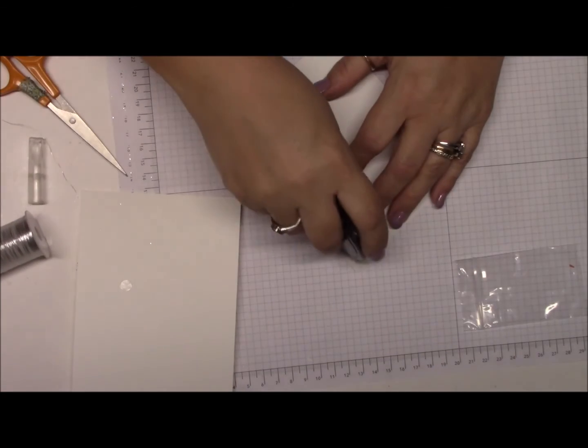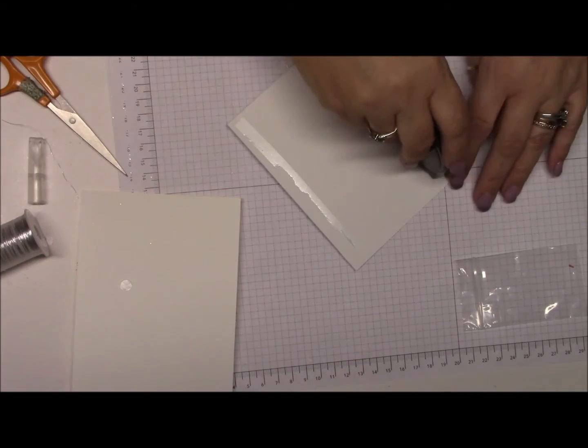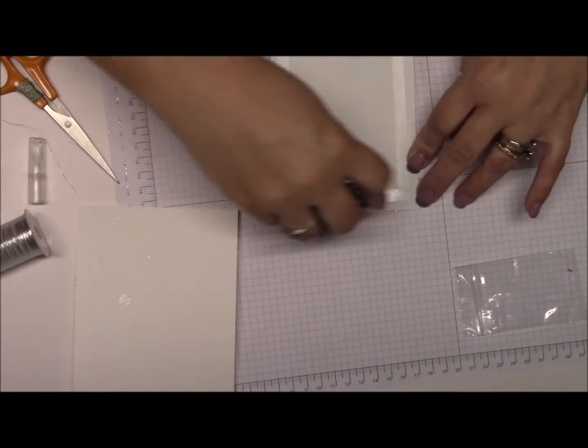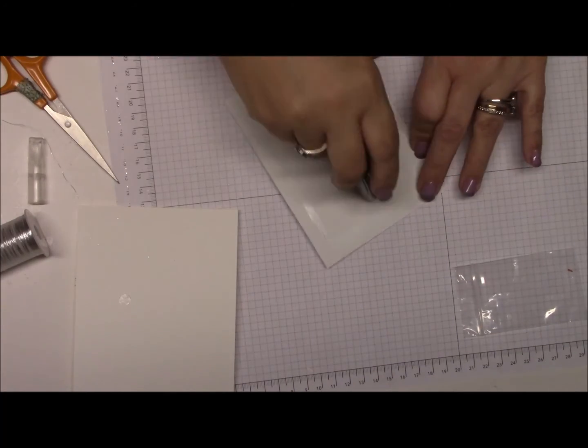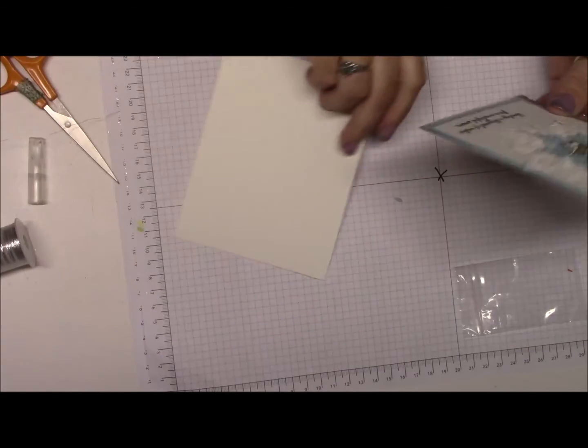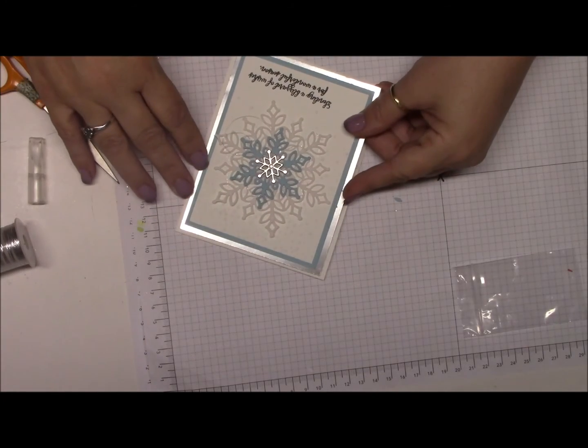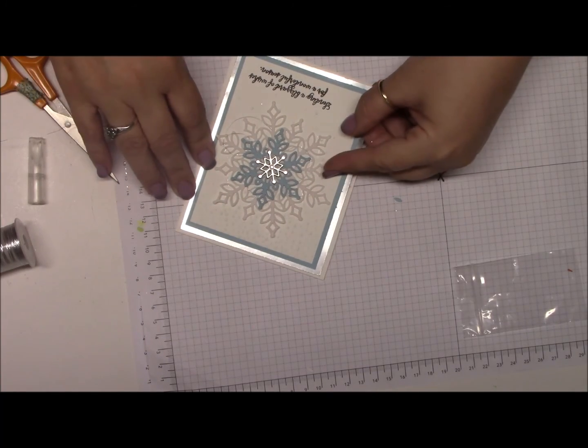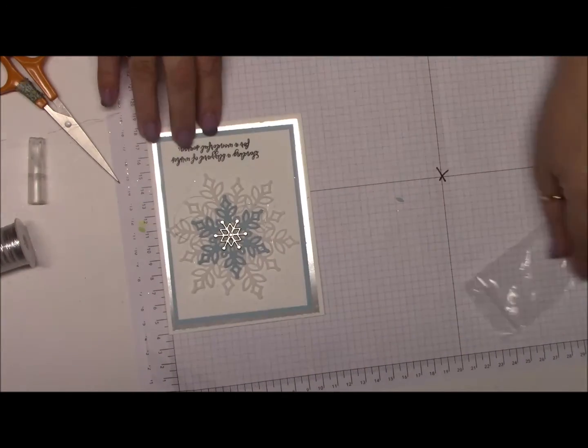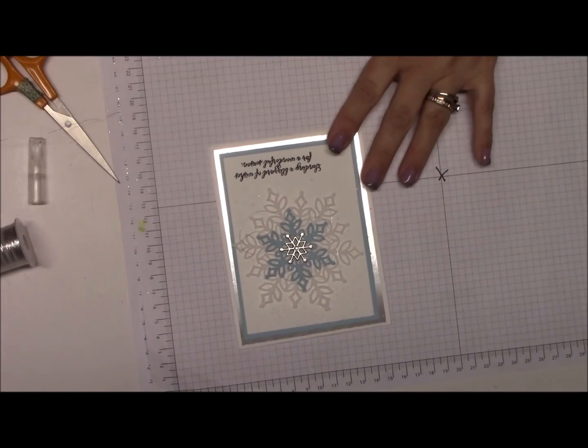And then I'm just going to go ahead and add your adhesive or use liquid glue or whatever you want to use. I like the snail, it's quick. And then just line this up and then put it on your card.